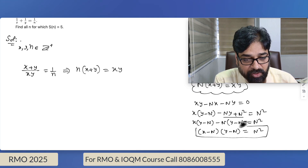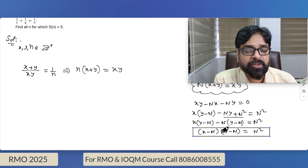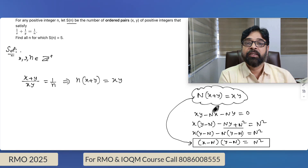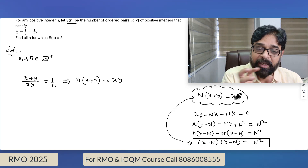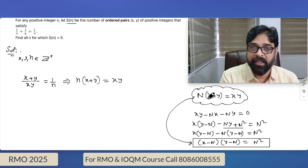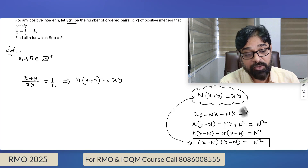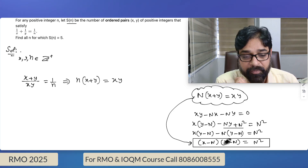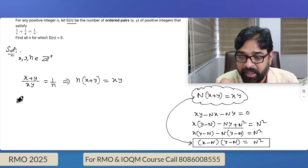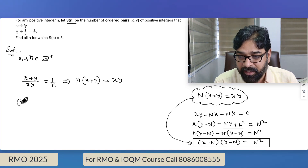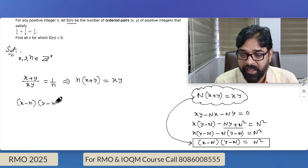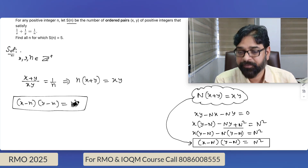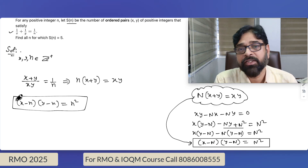This is the perfect and very common result. You should remember this: whenever you get a sum of two variables equal to a product of variables with some integer multiplication, it can always be written this way. Of course, n can come on either side — you can reverse it. Both forms of this equation are the same, just different explanations. Let us re-read the question: x is a positive integer, y is a positive integer, n is a positive integer, and we have to find the number of solutions.